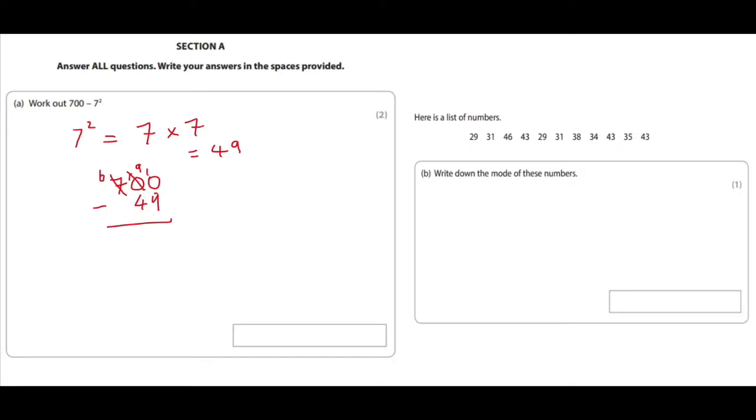And then we can do our calculation. 10 minus 9 equals 1. 9 minus 4 equals 5. And then we just bring the 6 down. And there's our answer.